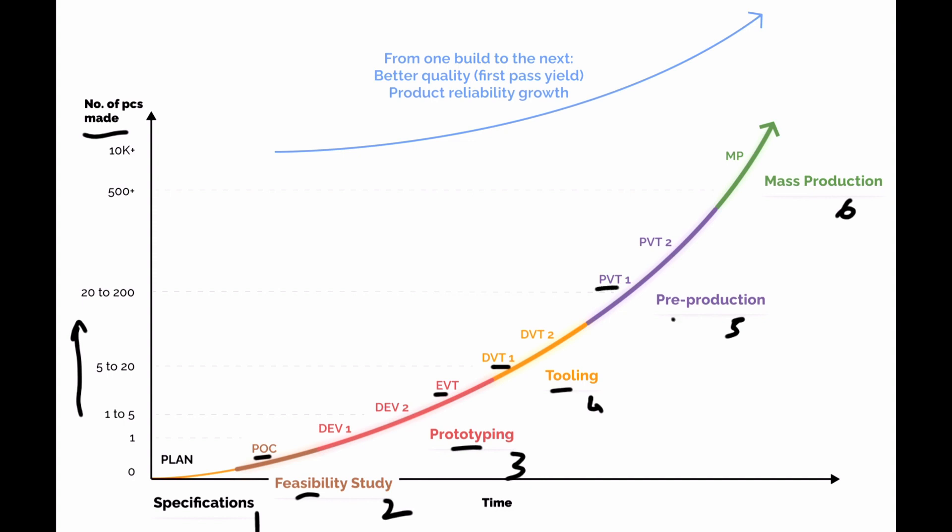Then it goes into pre-production preparation, often called PVT, production validation testing. So it's not mass production yet. It's still batches, often starting, let's say 40, 50 pieces, then going higher, maybe 100, 200 pieces and more. And then once it's clear that on the assembly lines everything is ready, all the testing stations are ready and so on, then we go into mass production, MP, and then of course the numbers here are higher and then it keeps ramping up.